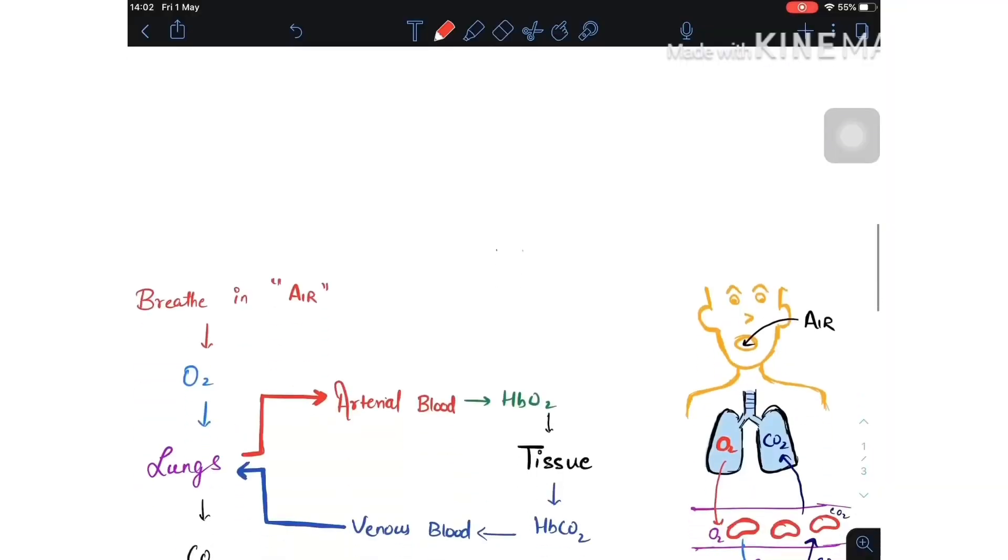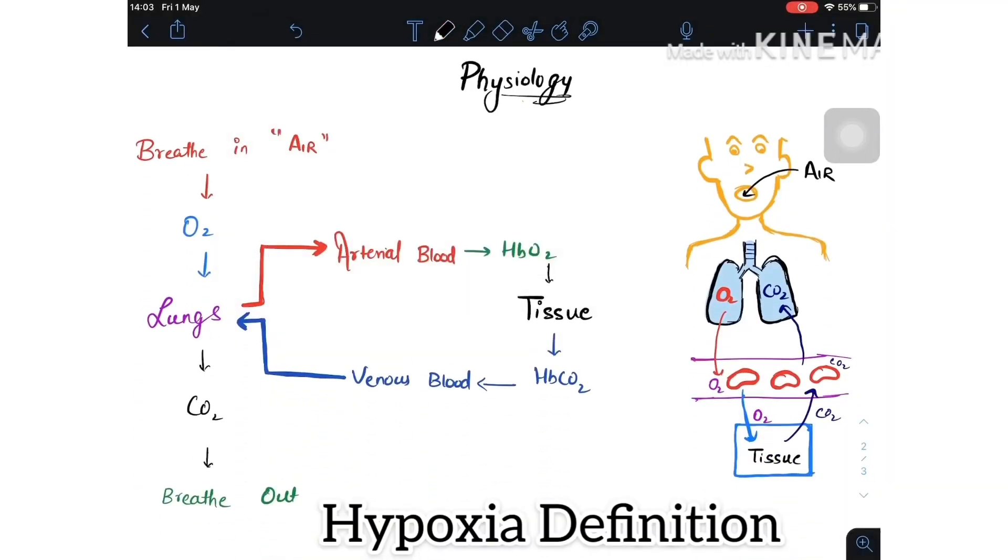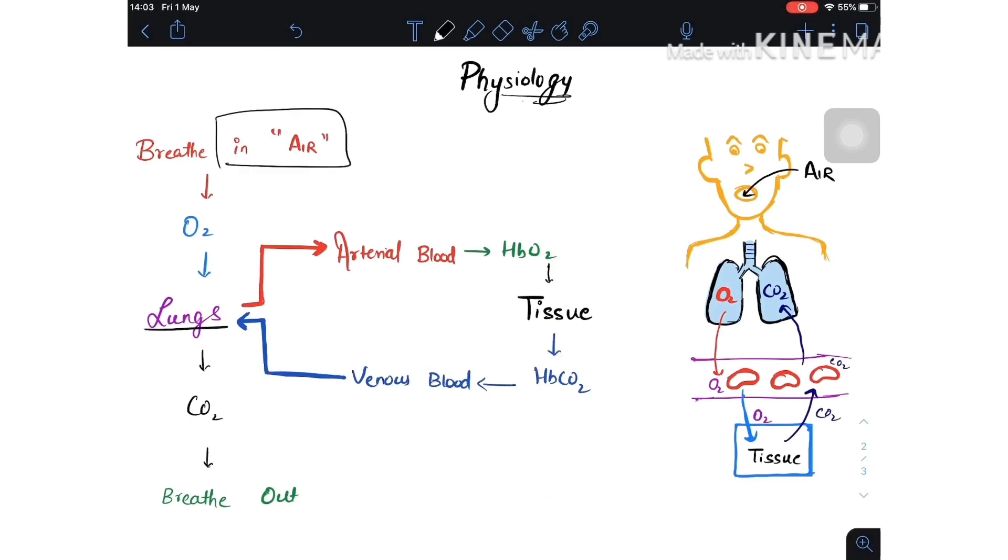To understand these terms better, first we should know the physiology. We breathe in air, this will go into the lungs and into the arterial blood. This will be picked up by the hemoglobin and then go into the tissue. The tissue will use this oxygen and form ATP and convert it into carbon dioxide, CO2.